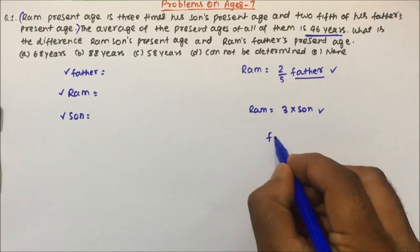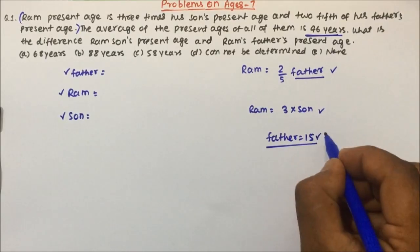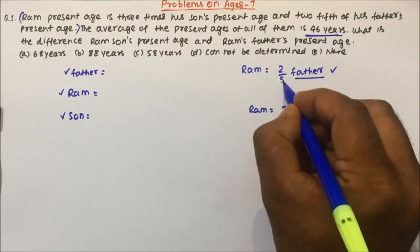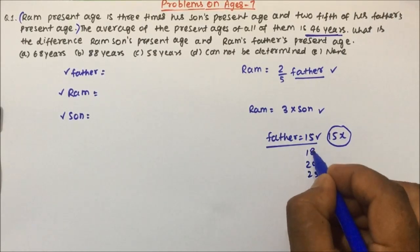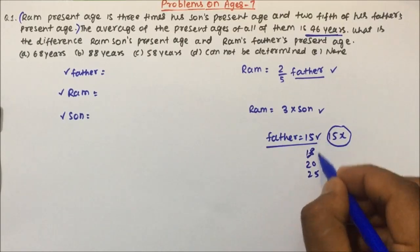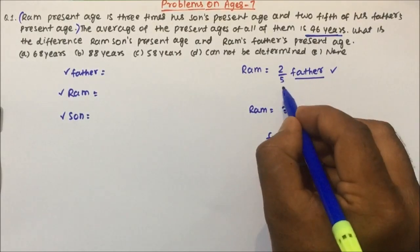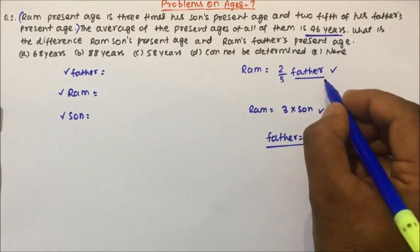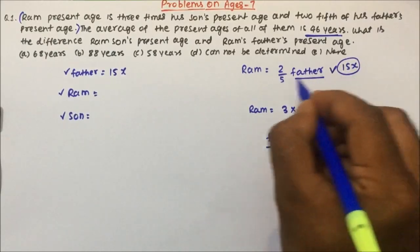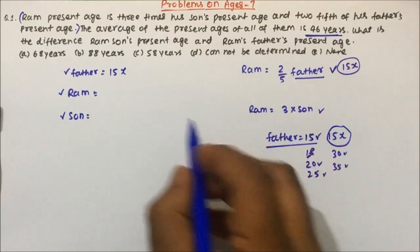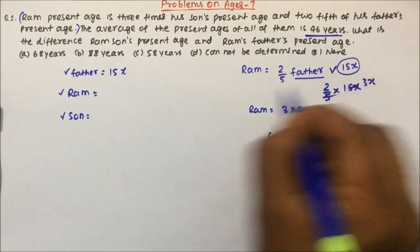Let's assume the father's present age is 15x. Why are we assuming 15? Because 15 will be divided by 5. We can even take 20, 25, 30, 35 — whatever value you want to take, the only condition is it should be divisible by 5. So let's assume father's age is 15x. Then Ram's age will become 2/5 into 15x, which is nothing but 6x.